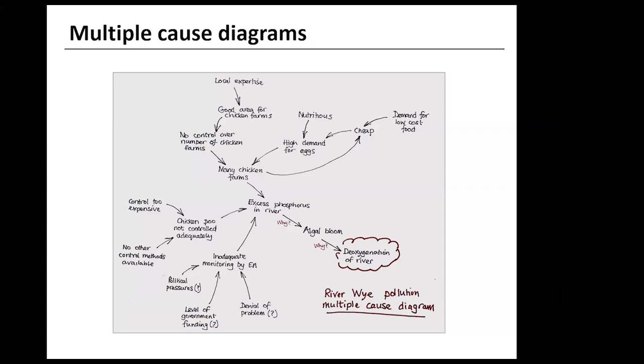So what do we have? We've got a diagram with a complex set of factors which are contributing to the ultimate deoxygenation of the river Wye. What this has shown is various potential causes for us to investigate, and areas where we don't have enough knowledge or understanding.